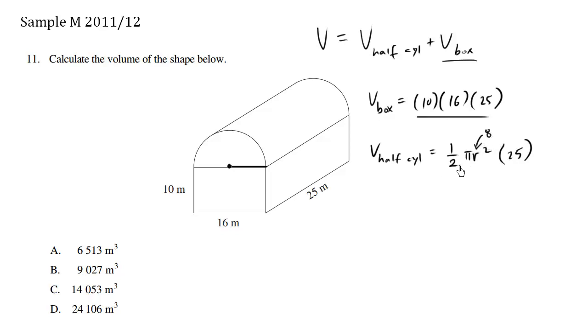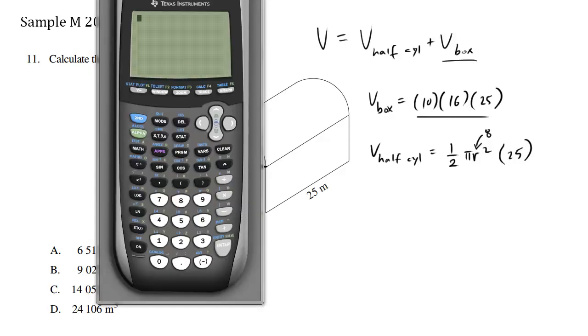So let's use our calculator to crunch this out. We're going to calculate this half cylinder volume, which is one half. 0.5 is the same thing as one half, times pi. There's pi over there. And r is 8. 8 times 8 is 64. So times 64 times 25. So we have this volume of a half cylinder is equal to approximately 2513.27.